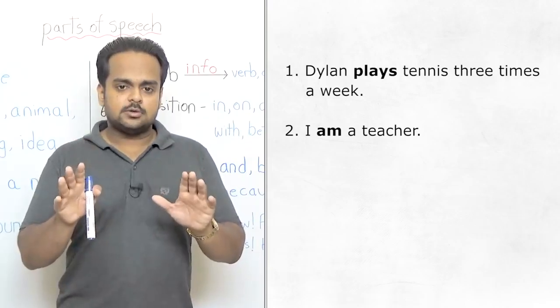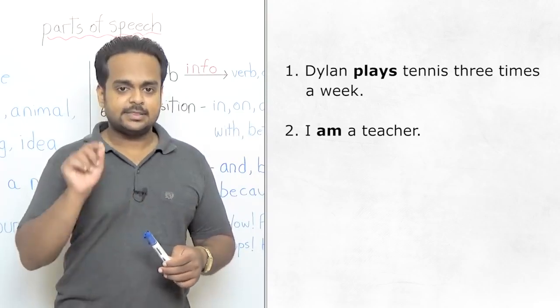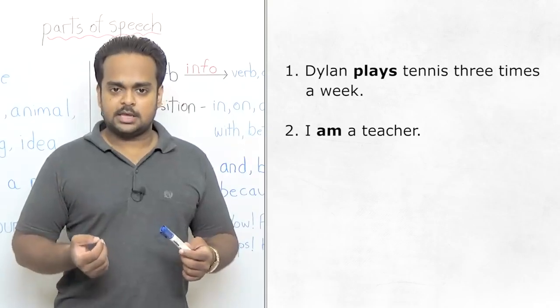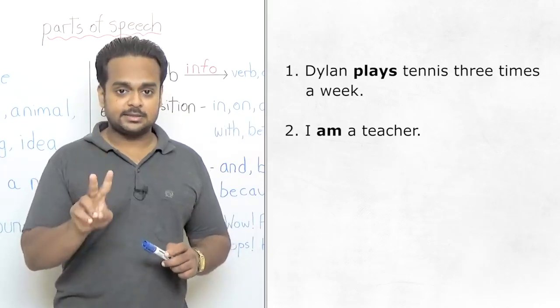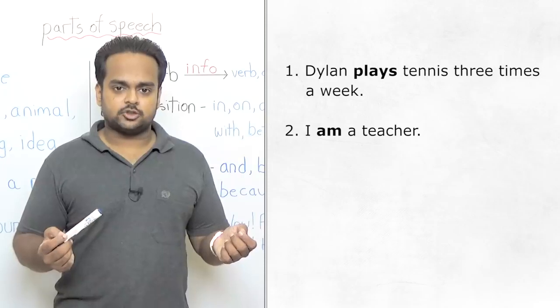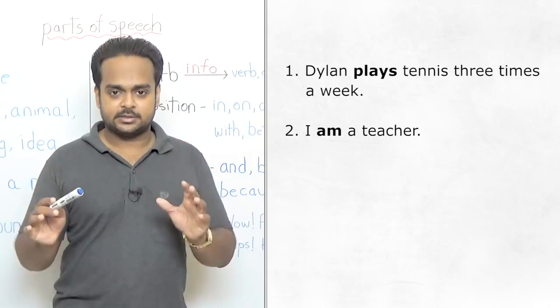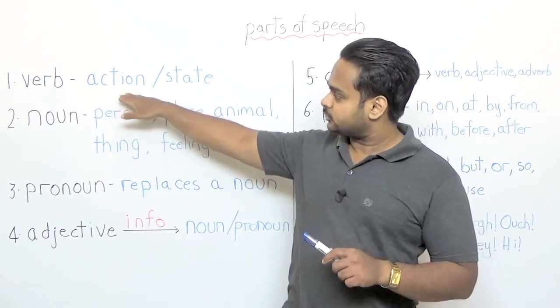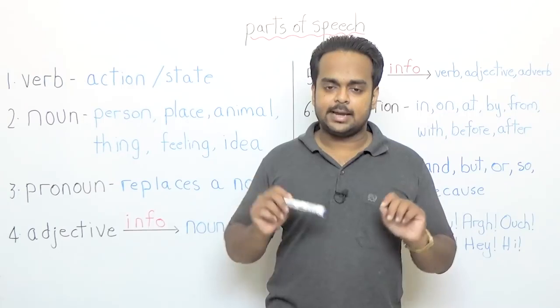Now I want you to notice a very important difference between these two sentences. Notice that in the first sentence we are talking about a physical action because playing is something that we do physically, but in the second sentence we are not talking about any physical action. We're just saying I am a teacher. We call that a state. That means a situation. So verbs can show actions or they can show states or situations. Those are the two types of verbs.